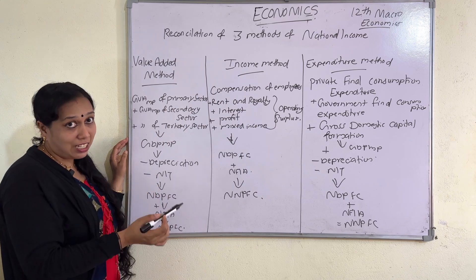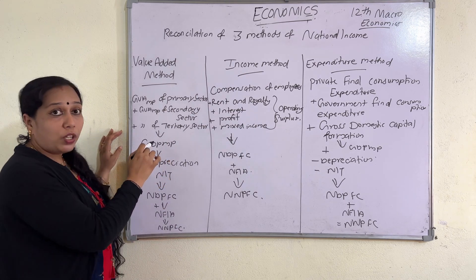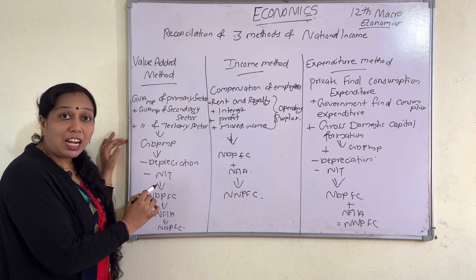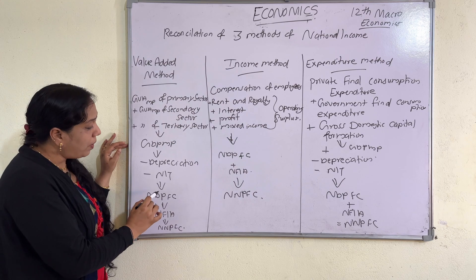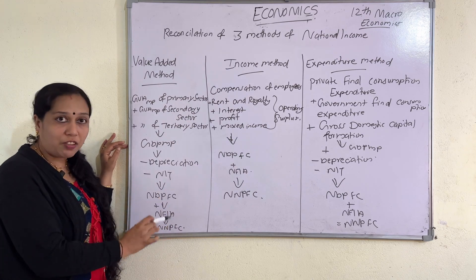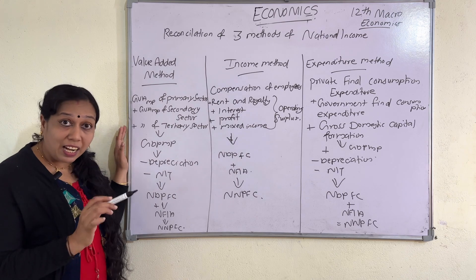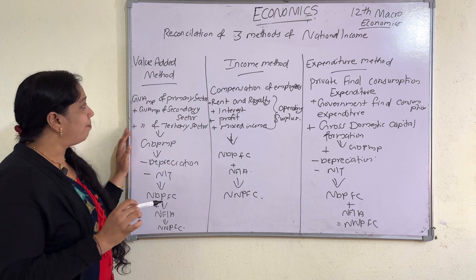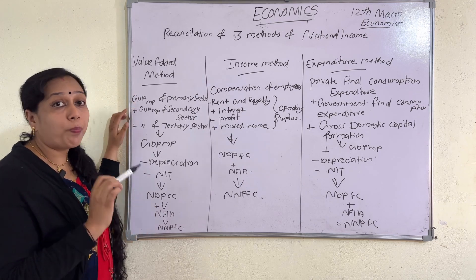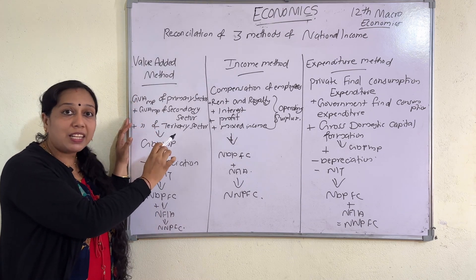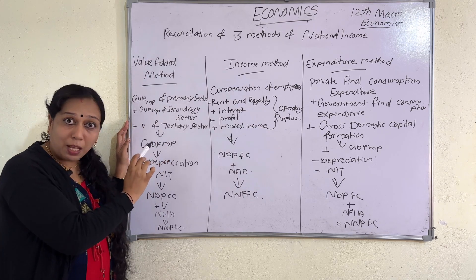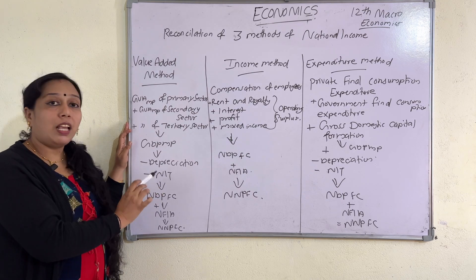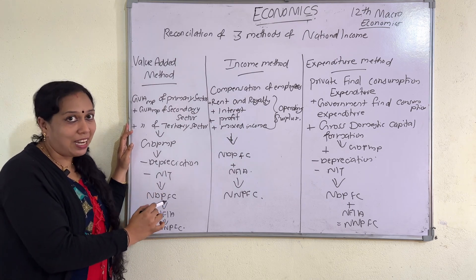NDP at FC is the national income. From GDPMP, minus depreciation gives you NDPMP; minus NIT gives you NDP at FC. Then NDP at FC plus NFIA gives you NNP at FC. So the formula: GVA at market price of primary sector plus secondary sector plus service sector equals GDPMP, minus depreciation, minus NIT gives NDPFC, plus NFIA gives NNPFC, which is the national income. This is also called the output method.